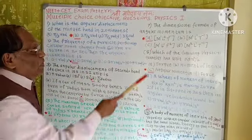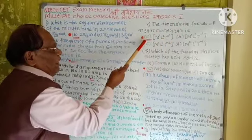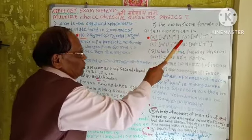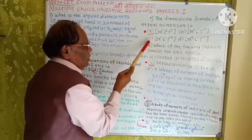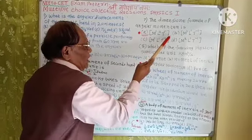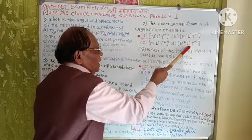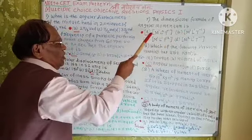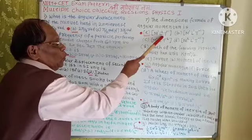Question 7: The dimensional formula of angular momentum is: A) [M¹ L² T⁻¹], B) [M¹ L¹ T⁻¹], C) [M² L¹ T⁻¹], D) [M² L¹ T⁻¹]. The correct option is A, i.e., [M¹ L² T⁻¹].